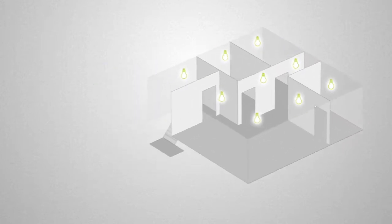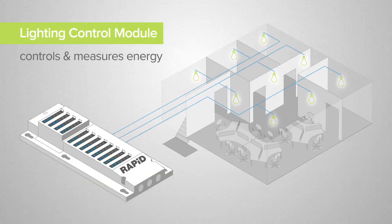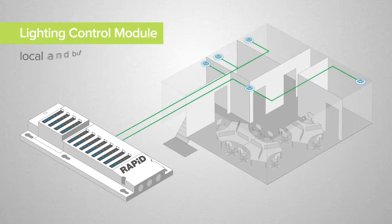All light fittings on a single floor are connected to a lighting control module that controls and measures energy. Presence detectors are also connected to the lighting control module to provide local and building-wide occupancy control.